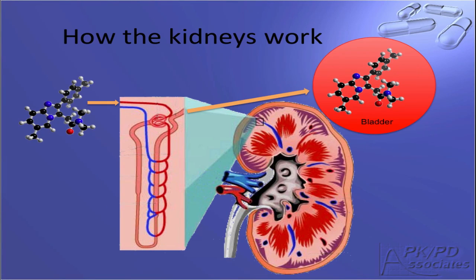The kidney is where drug is filtered out of the blood and into the urine. Blood enters the kidney and then is filtered through the glomerulus. Most free drug passes into the lumen of the kidney and heads towards the bladder. Some of the drug is then reabsorbed from the lumen into the bloodstream. The drug that isn't reabsorbed ends up in the bladder.